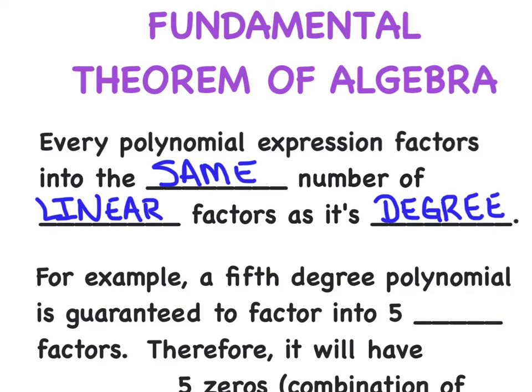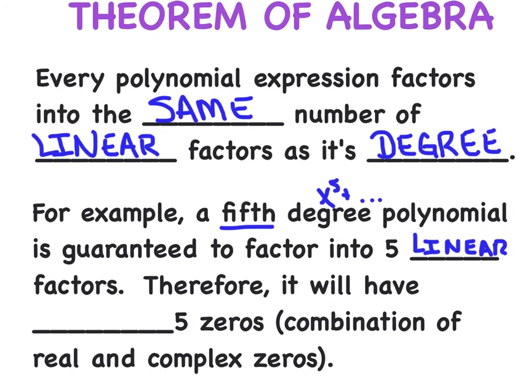Again, just to repeat it, every polynomial expression factors into the same number of linear factors as its degree. What does this mean in English? Well, for example, if we have a fifth degree polynomial, you know, it's x to the fifth plus da-da-da-da-da-da-da, it's guaranteed to factor into five linear factors. Therefore, it will have exactly, and that's a different word that we haven't used yet up until now, exactly five zeros, a combination of real and complex.